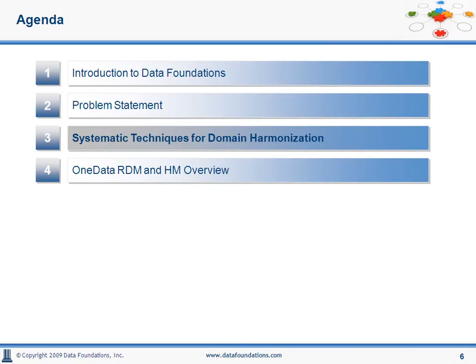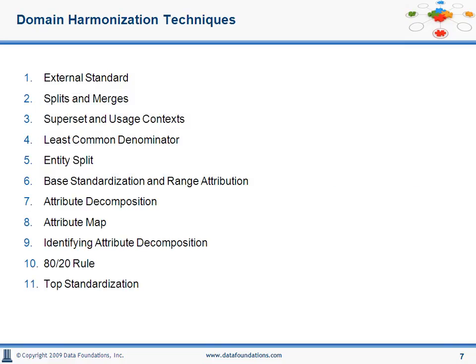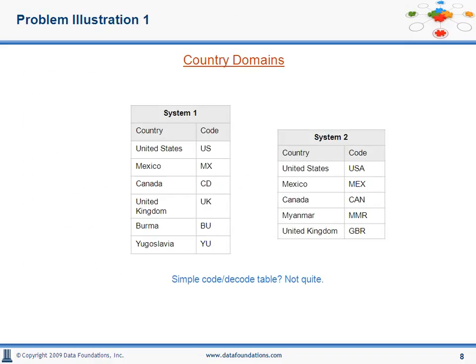Keeping with our agenda, let's go to number three: systematic techniques for domain harmonization. These are techniques for analytical MDM, and we've listed 11 different approaches that are used depending on the need and the domain at hand. Please note the illustrations here — we have two disparate systems, and you can, of course, easily extrapolate it to as many as you would be harmonizing. In any case, we're going to start with a very simple example of a country list. The two lists and two systems are similar, but not...